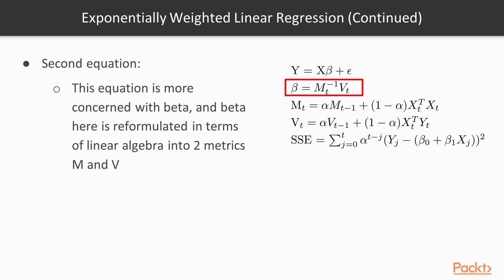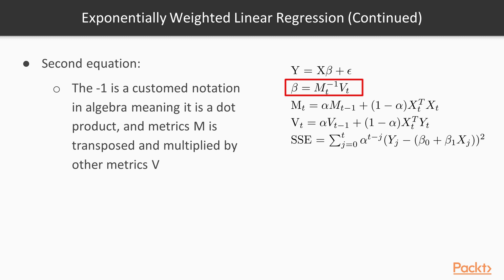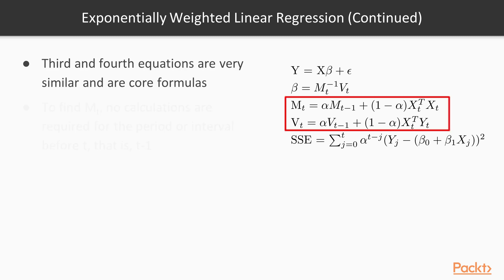The next equation is more concerned with beta. Beta here is reformulated in terms of linear algebra into two matrices M and V. The negative one is just notation accustomed in linear algebra, meaning that this is a dot product and this matrix M is transposed and multiplied by the other matrix V. The third and the fourth equations are very similar, and these are the core of the recursive formula that is applied in this section. The idea is that to find out the M matrix at time t, we don't have to do recalculations of all the period or the interval before t, that is t-1. We just give them a lower weight alpha.